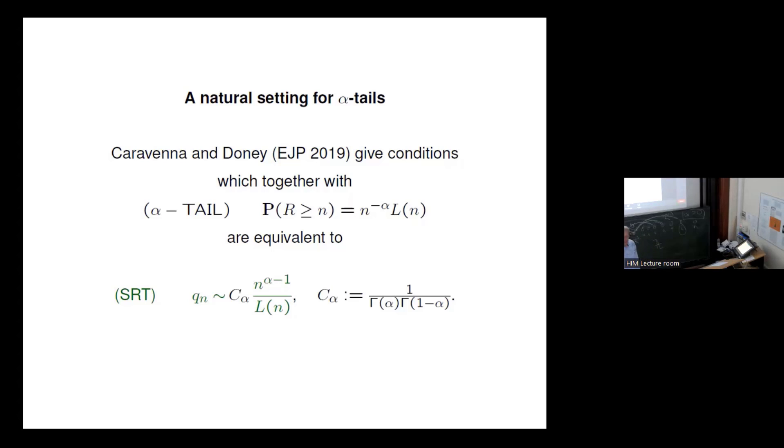And so this is this condition, which is entailed with their... Actually, one should phrase it this way, you have to think quite a time until you find examples which do not satisfy this. So the examples which do not satisfy what they call strong renewal theorem. The strong renewal theorem, it's actually a condition or a property. This condition SRT, that the q_n is so nicely behaved, follows from some very natural conditions.